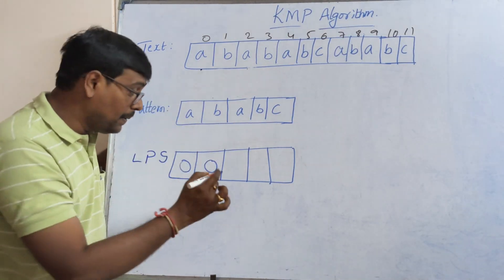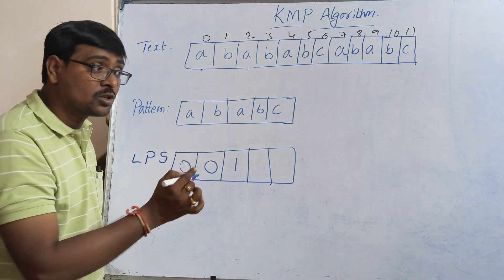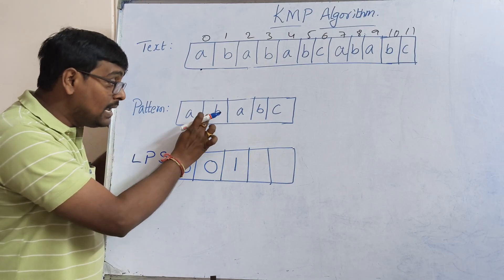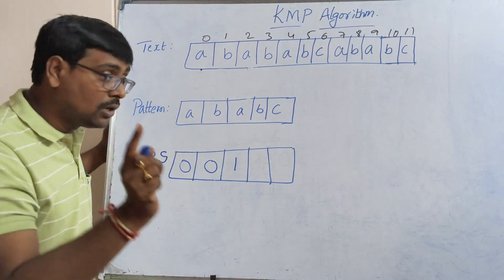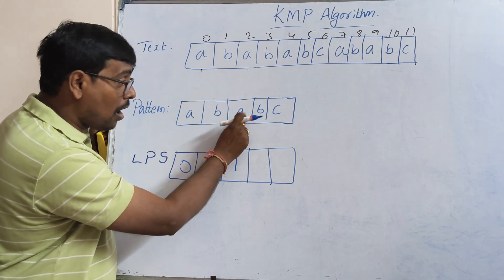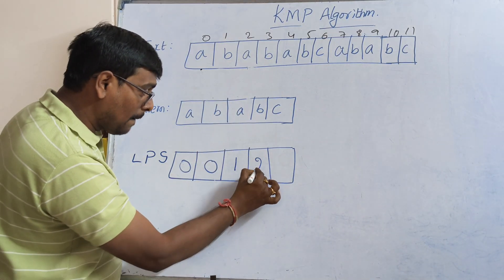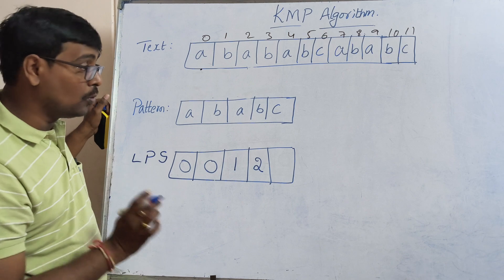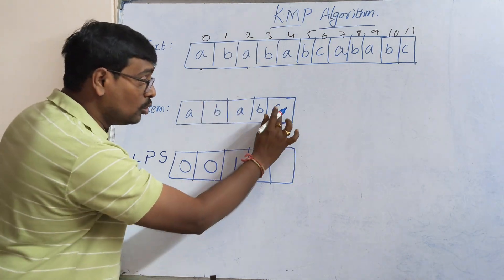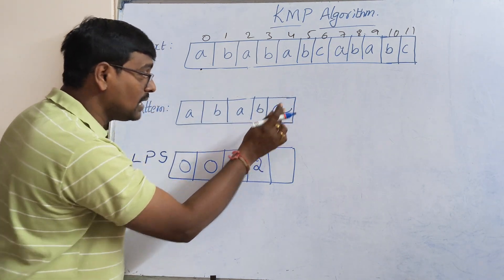'a' already appeared, so the value of 'a' is one. Now 'b' is also appeared. Observe here, 'b' followed by 'a' - already 'b' is followed by 'a', so the 'b' count is two.